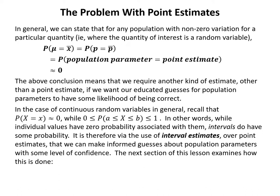Because a point estimate has virtually zero probability of being correct, we require another kind of estimate if we want our educated guesses to have some likelihood of being right. Recall that for continuous random variables, the probability that x equals some particular value is virtually zero, while the probability that x falls between two values a and b is always between 0 and 1. It is therefore via interval estimates rather than point estimates that we can make informed guesses about population parameters with some level of confidence.